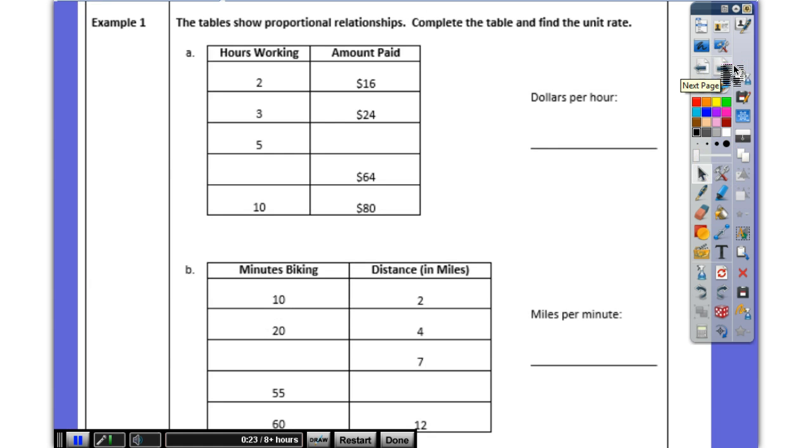The table shows proportional relationships. So what does that mean? If this shows proportional relationships, what do I know? What is zero then? Zero and zero. I know it's going to be zero and zero because it's going to go through the origin. I want to know how much it is dollars per hour. What is my rate of change here? What do I do to go from 2 to 3? Plus 1. What do I do to go from 16 to 24? Plus 8.